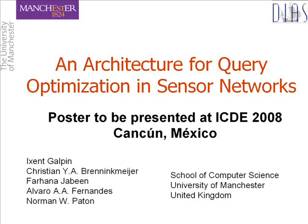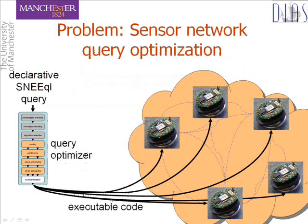An Architecture for Query Optimisation in Sensor Networks, a poster paper to be presented at ICDE 2008, written by Ishan Galpin, Kristen Brennigmeyer, Farhana Jabin, Alvar Fernandes and Norman Payton at the University of Manchester.